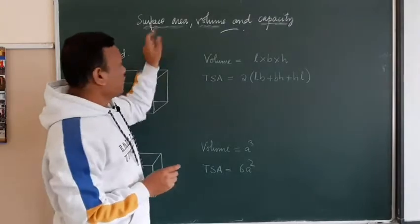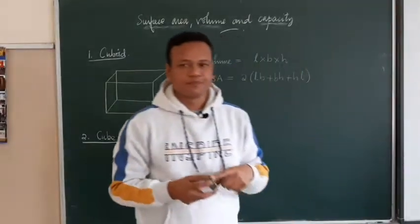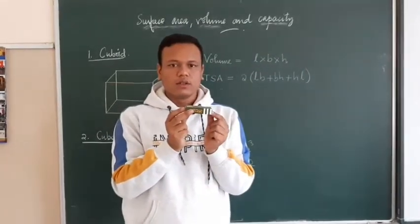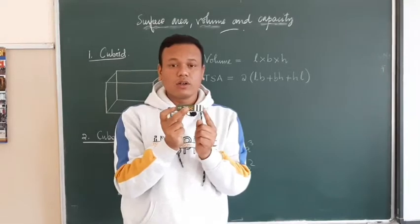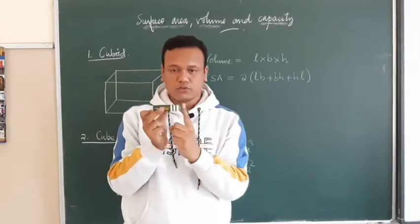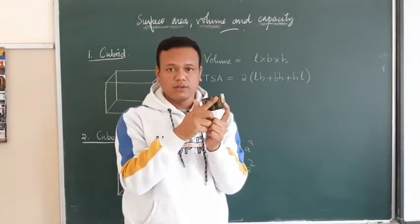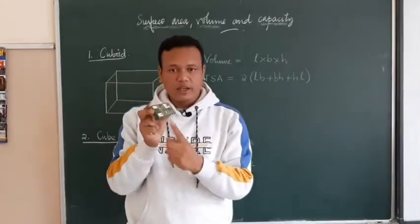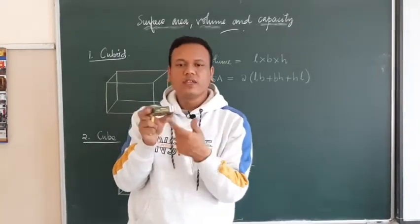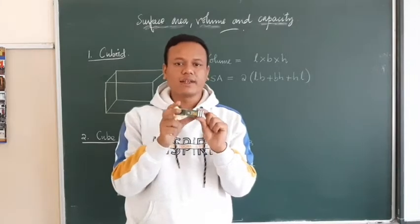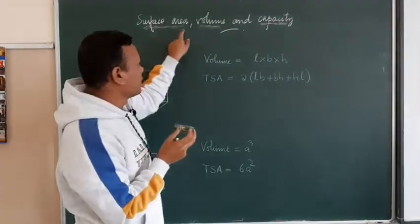Surface area — for example, let me take any solid. I will show you this chalk box. This shape is known as a cuboid. In this case, we have got six different faces. If I find the area of each face and add them up, the total that you get is known as its surface area.